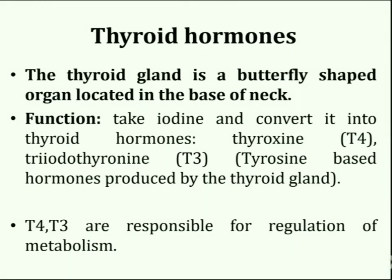First of all, introduction of thyroid gland and thyroid hormones. The thyroid gland is a butterfly-shaped organ located at the base of the neck. The function of the thyroid gland is to take iodine and convert it into thyroid hormones: thyroxine and triiodothyronine.